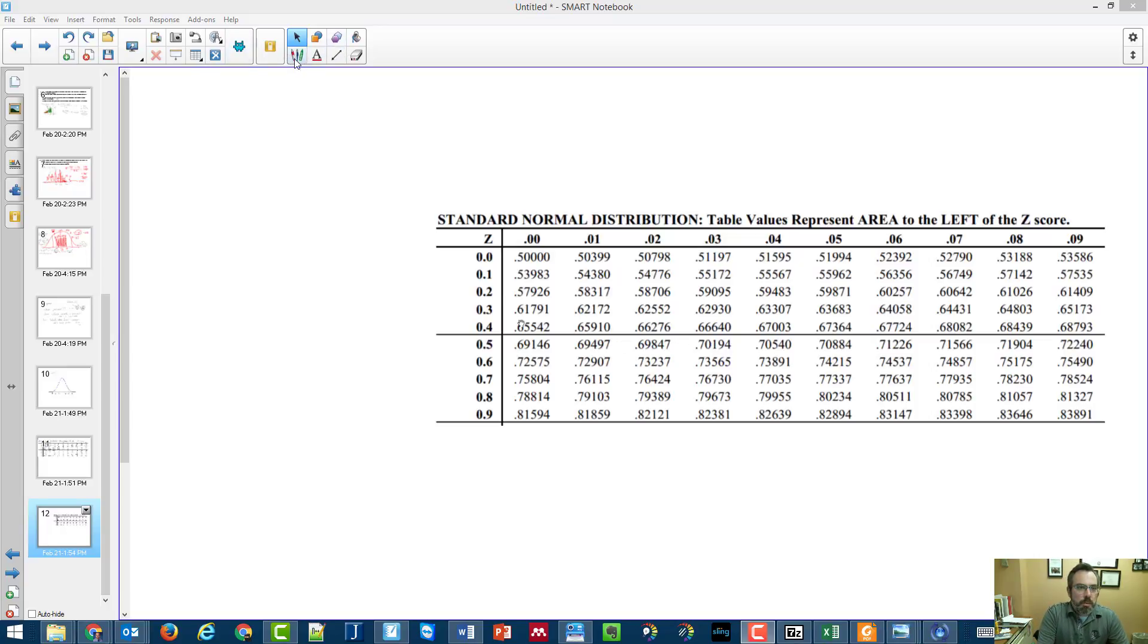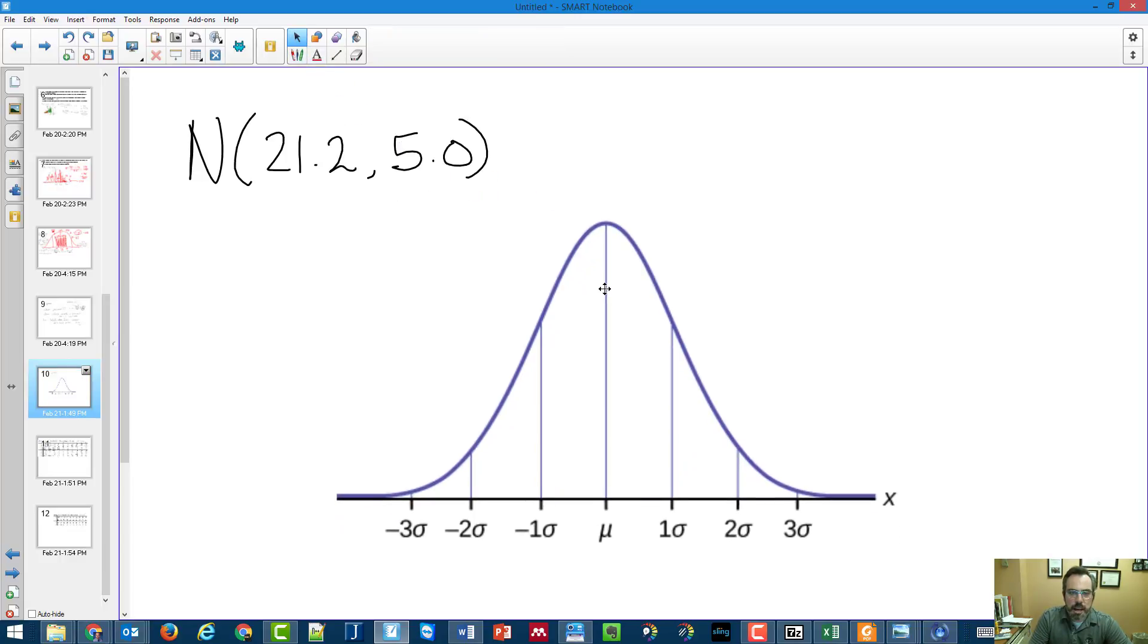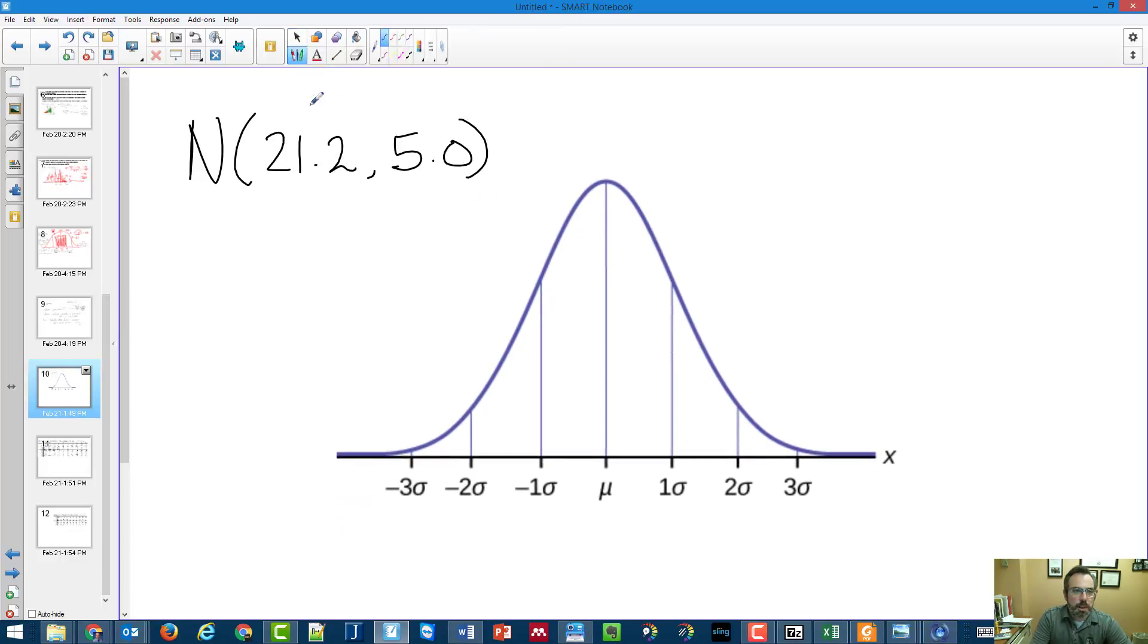When you are working with z-scores, it's all relevant to working with the normal distribution. Remembering that in a normal distribution, I've got things that I will always know. I know the mean, in this case 21.2. That's a z-score of zero, zero standard deviations. I know that the standard deviation according to this is five.